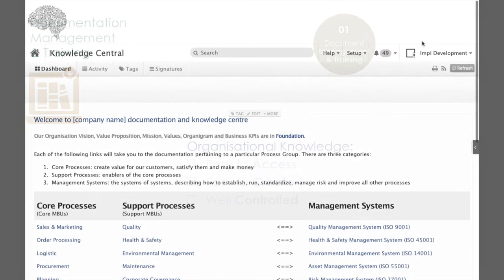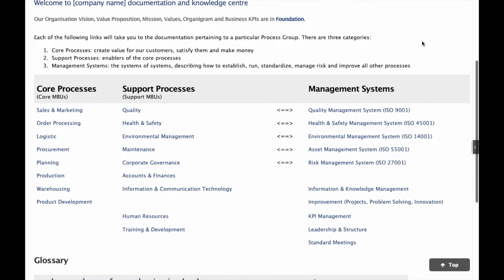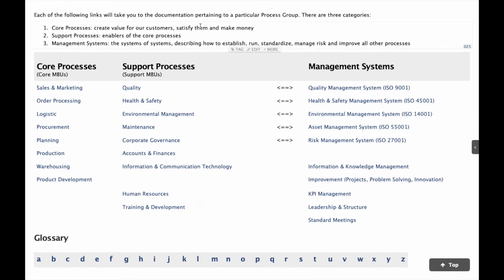To meet those requirements, MP provides a pre-configured document management system on the team page platform. Knowledge is organized in four main groups and sections for easy access. We have our core processes where value is created for the customers. Then we have the support processes. They are enablers of the core processes. Under management systems are regrouped the various international industry standards the company has established. The last group is a glossary where each definition can be linked to other documents.